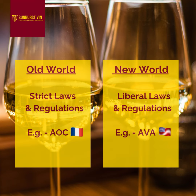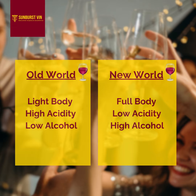New World countries follow regulations that allow winemakers to adapt and use modern technologies. For example, the USA has AVA which specifies delimited wine growing regions but liberalizes the use of grape varieties and winemaking methods.